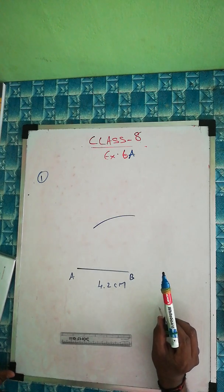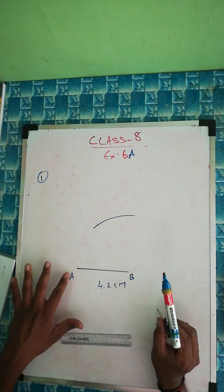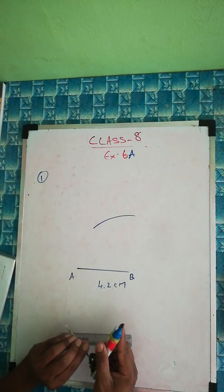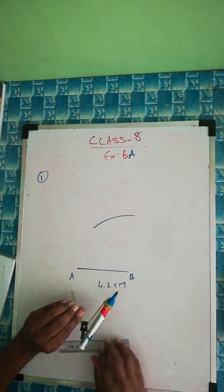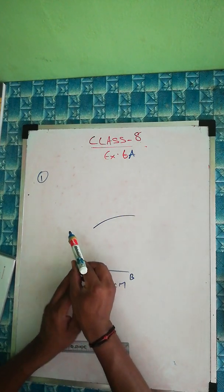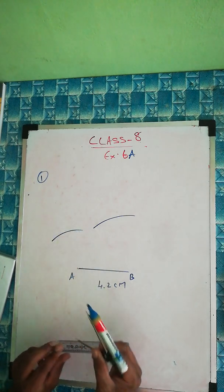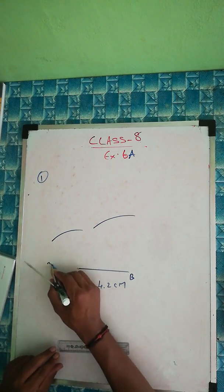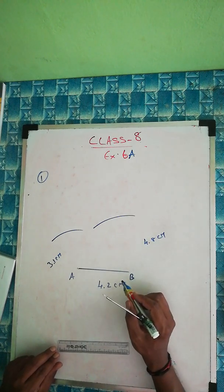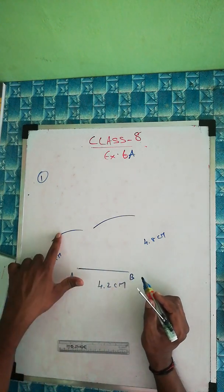Next is CD. In quadrilateral ABCD, we'll take AD next — AD is 3.1 cm. Take your scale, measure 3.1 cm from A, and mark it. We already took BC as 4.8 cm. The next measurement is BD, which is 6.7 cm — so B and D will be 6.7 cm apart.